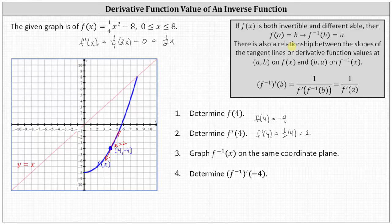Let's use this to find several points on the graph of f inverse of x. To begin, if f of x contains the point 4 comma negative 4, then negative 4 comma 4 must be a point on the graph of f inverse of x. Let's go ahead and plot that point in green. Now let's find several more points on f of x and find the corresponding points on f inverse of x, using the y-intercept, another point, and the endpoint.